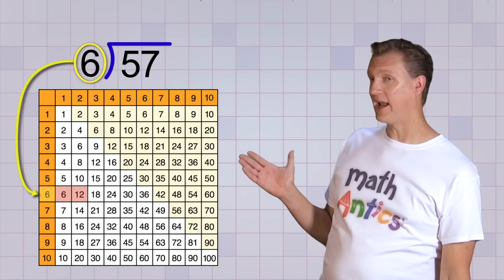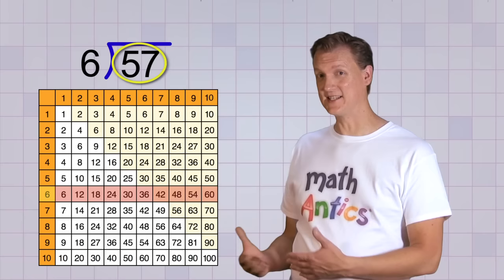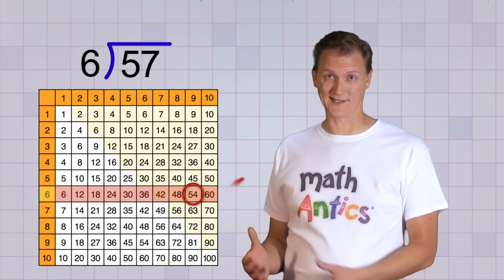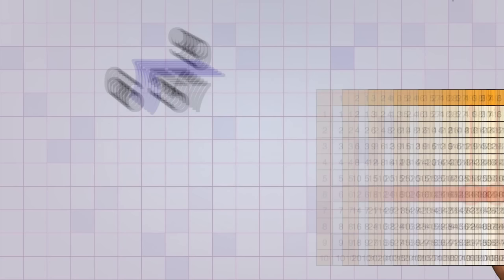Here they are 6, 12, 18, 24, 30, 36, 42, 48, 54, and 60. We need the multiple that's 57, or almost 57. And since 57's not on the list, it looks like 54 is the next closest thing, without being too big like 60. And to get 54, we need to have 9 sixes, so we'll choose 9 as our answer.